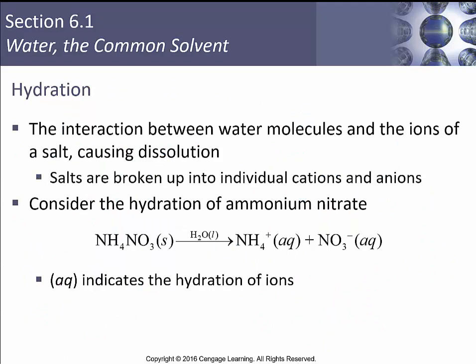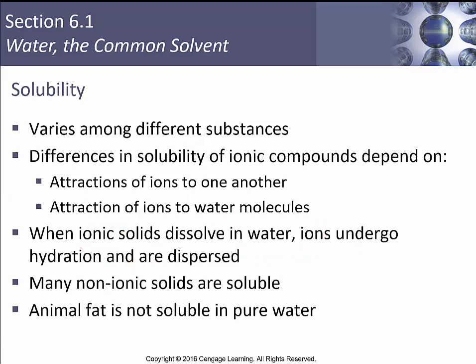Salts are broken up into their individual cations and anions. For example, ammonium nitrate — NH4⁺ is the polyatomic cation and nitrate is the polyatomic anion — in the presence of water will dissolve into its component cation and anion. The (aq) notation indicates these are hydrated, solvated, or dissolved ions. Solubility varies among different substances, depending on the attraction of the ions to each other and to the water molecules. When an ionic solid dissolves, the ions undergo hydration and are dispersed — they're free to move about the solution.